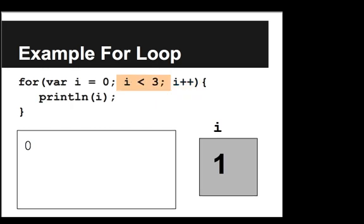And so now we check, okay, well is i less than three? Well one is less than three, so then we execute the code in the body of the for loop, we print line i. Now we increment i plus plus, so i now has the value two.